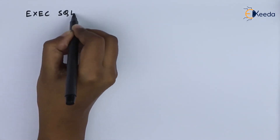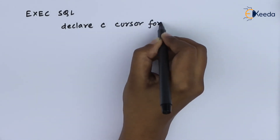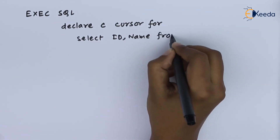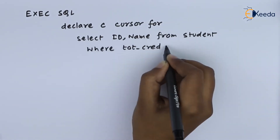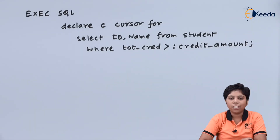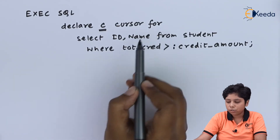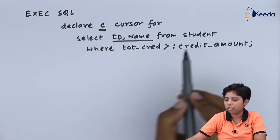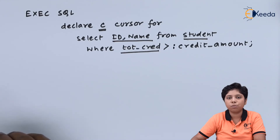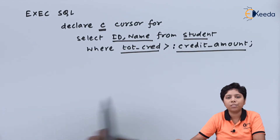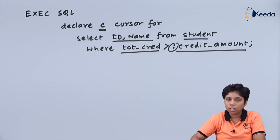Now we will declare a cursor. A cursor is a pointer which can point to the relation, do the select and update on behalf of the host language to the relations. Here we are declaring a cursor C that we will use for selecting the attributes ID and name from the relation student, where the total_credit attribute of student is greater than the host language variable credit_amount. Note the colon before credit_amount because it belongs to a host language.